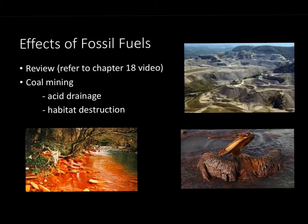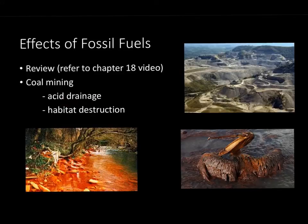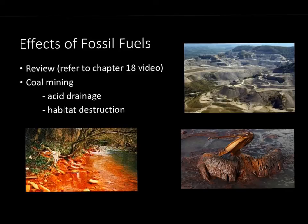Moving on to the effects of fossil fuels — most of this section is a review from Chapter 18 regarding water and air pollution. In Chapter 18 we didn't look at effects from coal mining specifically. There's a term known as acid drainage, which is basically a natural process, but the mining of coal accelerates the amount and magnitude of acid drainage quite a lot — essentially sulfuric acid forming and ruining river land. Another pretty negative effect of coal mining is habitat destruction. Mountaintop removal literally cuts off the top of mountains, completely destroying an ecosystem in order to mine coal.